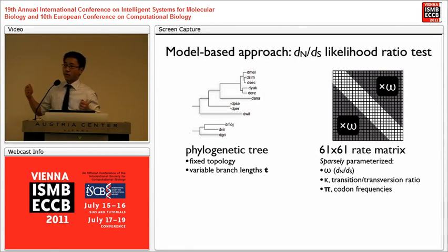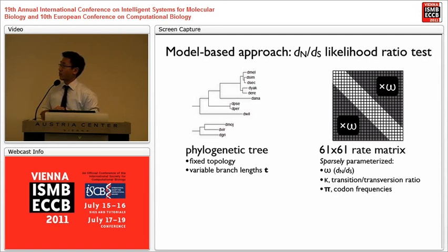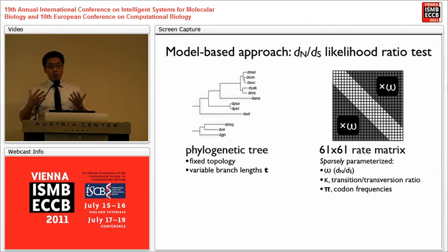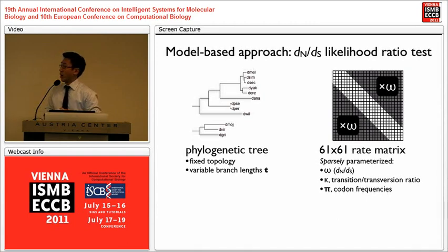A key feature of this dN/dS test, formulated in the 90s, is that the rate matrix — while it has roughly 61×61, or about 4,000 rates — is very sparsely parameterized. All those rates are determined by just a few parameters: omega or dN/dS, kappa (the transition-transversion ratio), and a vector of codon frequencies. That sparse parameterization made sense in the 90s when there wasn't much data — you'd fit models to one gene or one open reading frame — so adding many more parameters would cause overfitting.